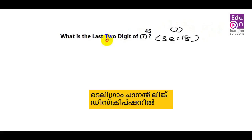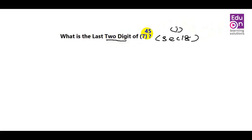Let's find the last two digits of 7 raised to 45. Let's go to the exam — the higher level exam and the next level exam.